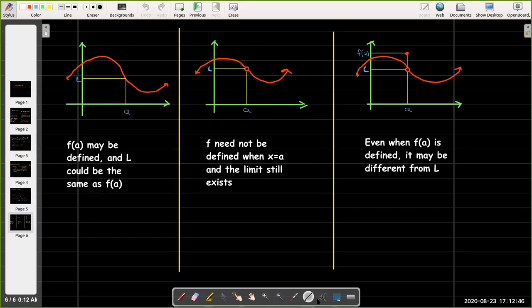The one important condition is that it does not matter what happens to the function when x equals a, if we're discussing the limit as x approaches a. So it could be that f of a is defined, and f of a is the same as L.